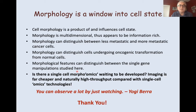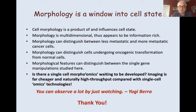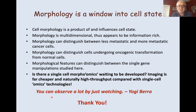The question is whether these are actually morphological signatures of that particular genotype. These are really exciting questions that can emerge from an analysis like this — ones we are still trying to figure out how to answer. But hopefully what I've convinced you is that cell morphology is a window into cell state. Cell morphology is a product of and influences cell state. It's multidimensional and information-rich. There is a single-cell morpho-omics waiting to be developed. Imaging is far cheaper and naturally high-throughput compared with single-cell omics technologies. As Yogi Berra immortally said, you can observe a lot by just watching. Thank you very much and I'd be happy to take questions.